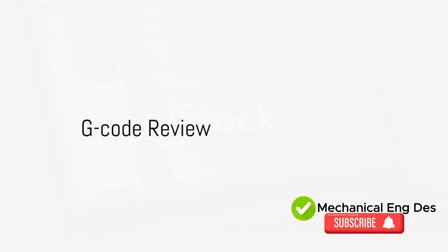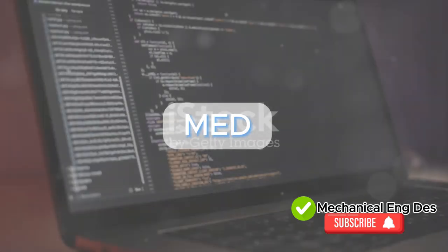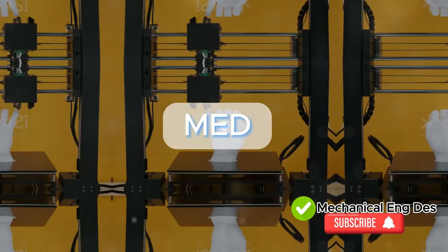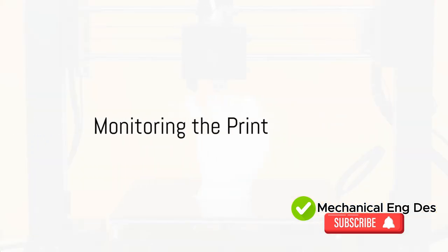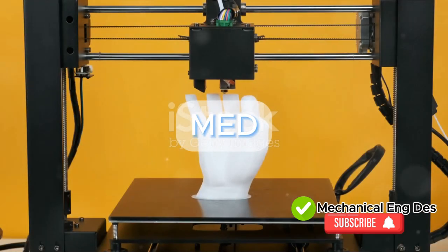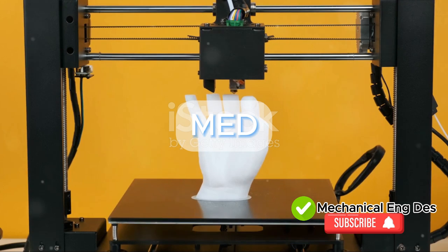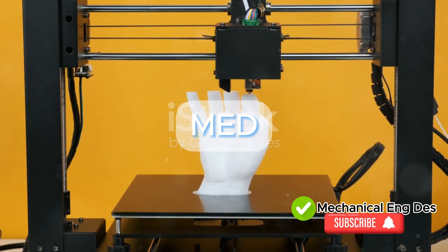Now review the G-code. The slicer generates this, and errors in the G-code can lead to printing issues. If you can, monitor the print in progress. This can help you spot issues like misalignment, unusual noises, or other abnormalities.